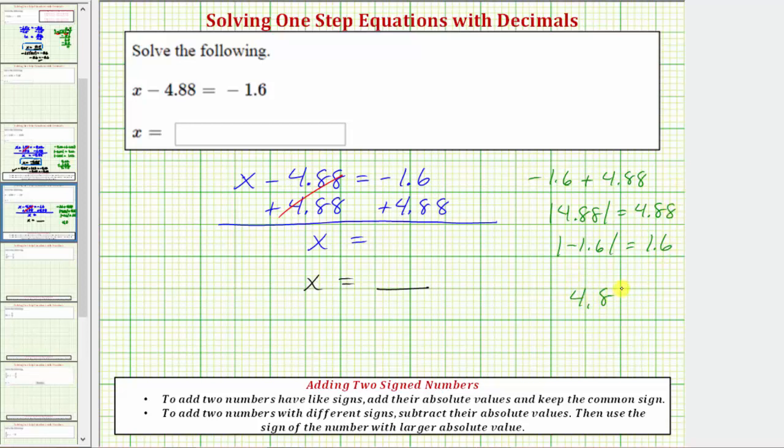If we want, we can put a zero in the hundredths place value here. Let's put the decimal point in the difference, and now we'll subtract. Eight minus zero is eight. Eight minus six is two. And four minus one is three.